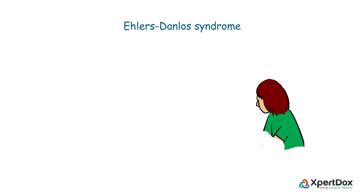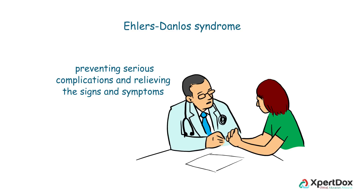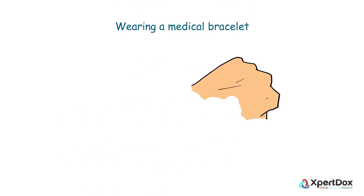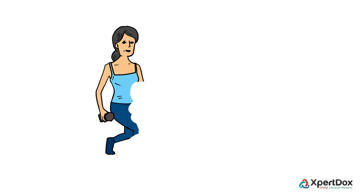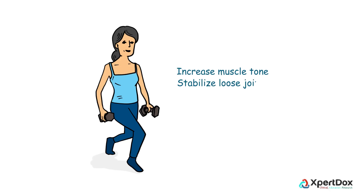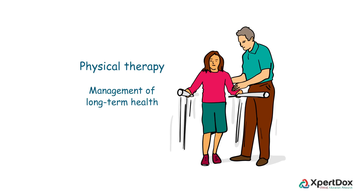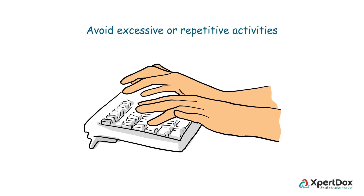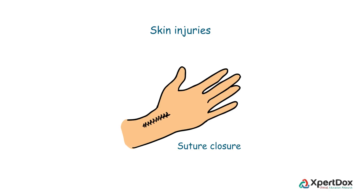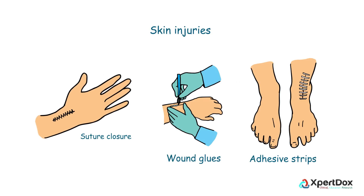There is no cure for Ehlers-Danlos Syndrome. Management focuses heavily on preventing serious complications and relieving signs and symptoms. Wearing a medical bracelet can help in case of a life-threatening emergency, such as arterial rupture. Low resistance exercises are advised to help increase muscle tone and stabilize loose joints. Physical therapy can be very helpful in the management of long-term health. Patients are instructed to avoid excessive or repetitive activities that produce undue strain on their hypermobile joints. In the event of skin injuries, extreme care must be taken with suture closure, and alternatives such as wound glues and adhesive strips should be considered.